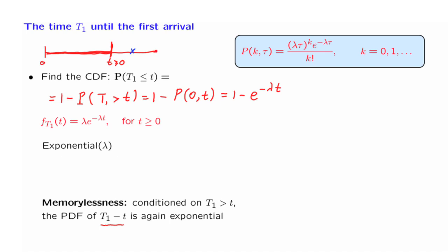This is essentially an expression of a fresh start property of the Poisson process, which is analogous to the fresh start properties for the Bernoulli process, and we will be discussing this further. Having figured out the distribution of the time of the first arrival, let us now study the time of the kth arrival, a random variable that we denote by Y sub k, similar to the case of the Bernoulli process. This random variable is continuous, because arrivals happen in continuous time, so it will be described by a PDF.